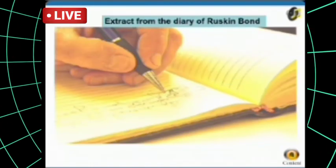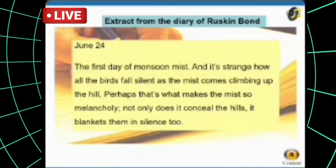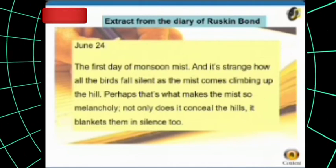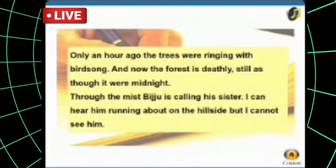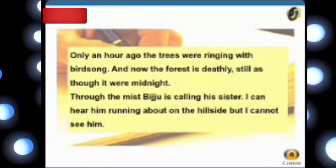Extract from the diary of Ruskin Bond, June 24 — the first day of monsoon: 'Mist, and it's strange how all the birds fall silent as the mist comes climbing up the hill. Perhaps that's what makes the mist so melancholy — not only does it conceal the hills, it blankets them in silence too. Only an hour ago the trees were ringing with birdsong, and now the forest is deathly still, as though it were midnight. Through the mist, Biju is calling his sister. I can hear him running about on the hillside, but I cannot see him.'